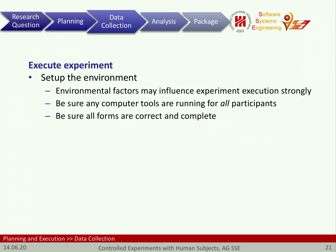Next, we can execute the experiment. We typically start by setting up the environment, because environmental factors may influence execution and its outcome strongly, leading to incorrect results. For example, if people need to sit uncomfortably at a desk where they can hardly write — and writing is part of the experiment — this will impact speed and accuracy. Also, if computer tools are involved, we need to ensure they are running for all participants, that everyone can access them, that forms are correct and complete.